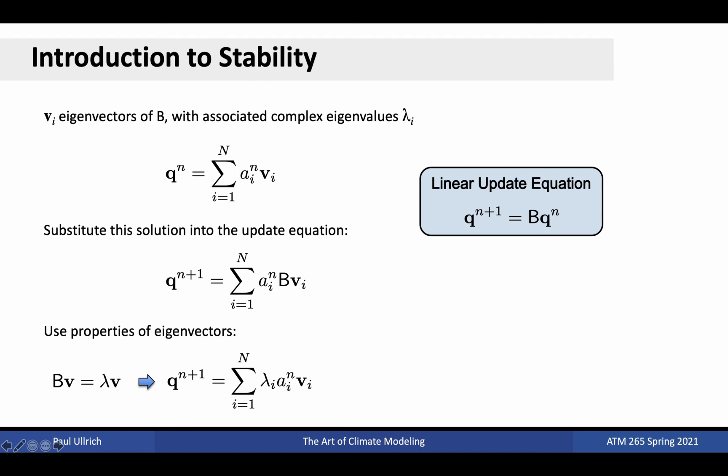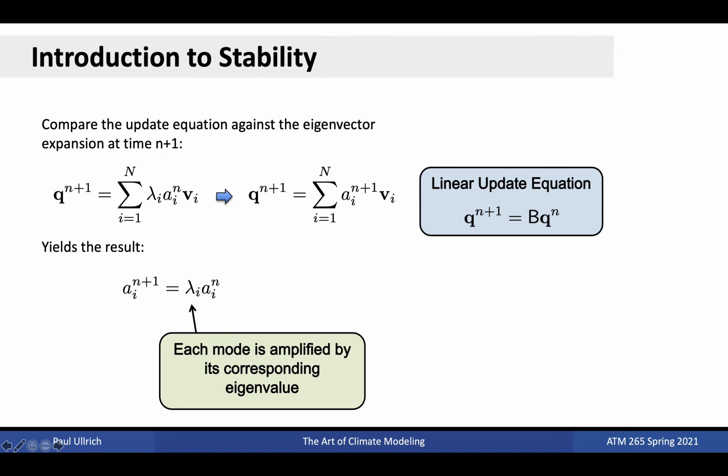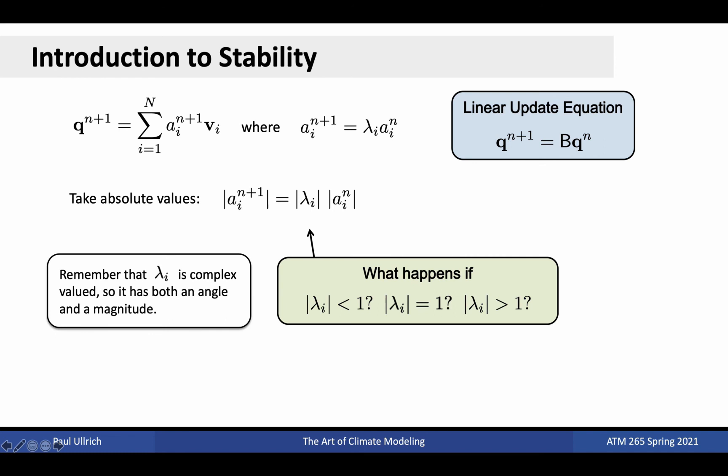Since we have as many eigenvectors as degrees of freedom in the problem, we can uniquely decompose any vector q into a linear combination of these wave modes. Substituting this expression into the update equation and applying the properties of eigenvectors yields the expression at the bottom of this slide. Then comparing this formula against the linear expansion at time n plus 1 reveals a multiplicative relationship between the wave mode coefficients at time n plus 1 and those at time n. Namely, we find that the new coefficient a_(n+1) equals the eigenvalue of this mode times the old coefficient value a_n. Physically, this means that each wave mode will experience a phase shift and an amplification which is determined by the eigenvalue lambda_i.